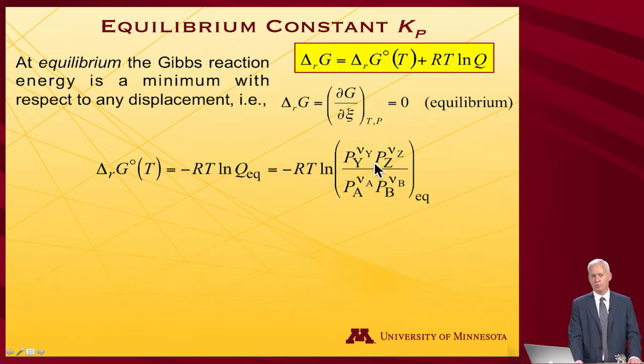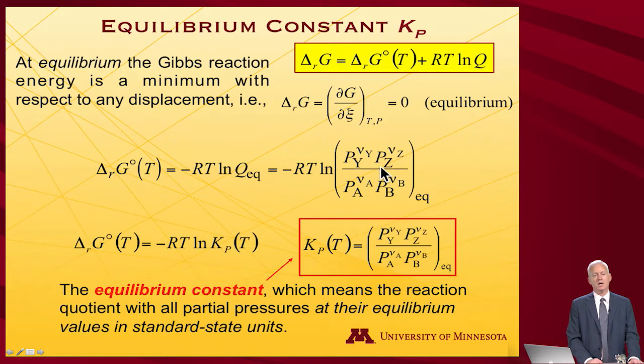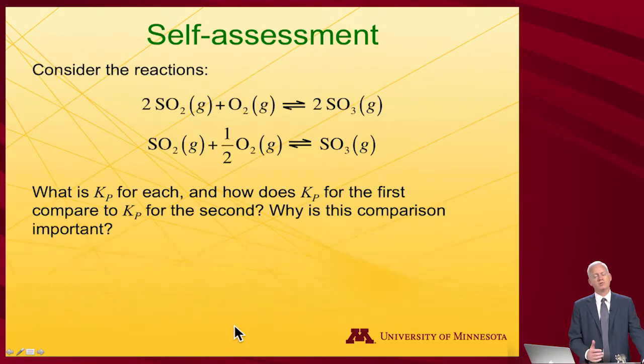Given that ΔrG under the conditions is equal to zero, I can rearrange this expression. I get that the standard state free energy of reaction is equal to minus RT log the reaction quotient when measured at equilibrium. I've let the system come to equilibrium, I know it's at equilibrium, that allows me to know that any further free energy of reaction has a free energy change of zero.